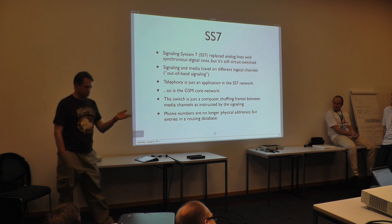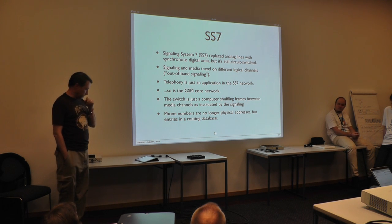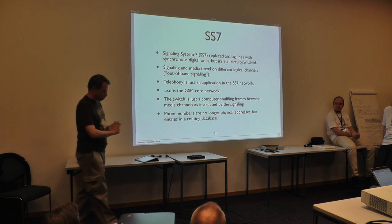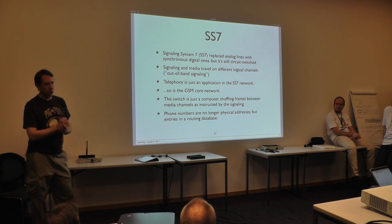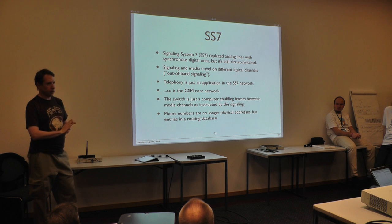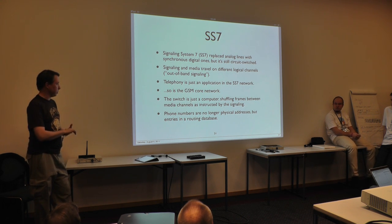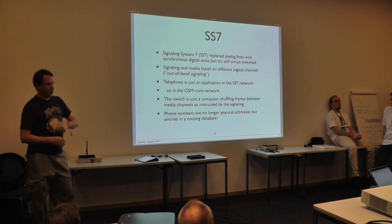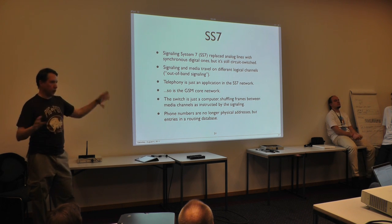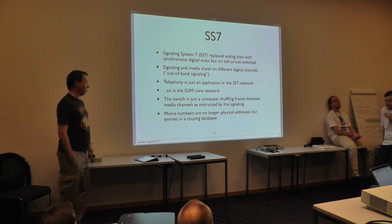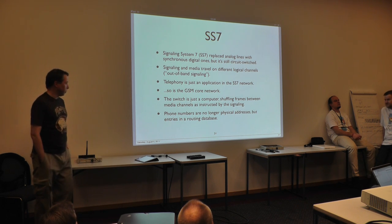Around 1980, something new happened called SS7 — Signaling System Number 7. Analog lines, for the most part, were being replaced by synchronous digital lines. ISDN is very closely related to the emergence of SS7; they sort of come out of the same world. Signaling and media can now travel in different logical channels, different physical channels, and can follow completely different paths around the world.